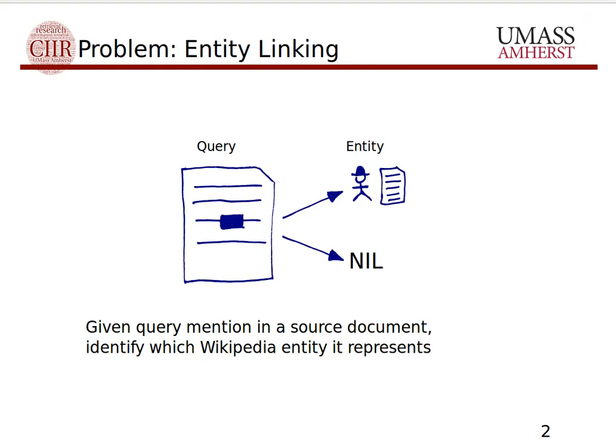So what is this problem that we're trying to tackle when we're talking about entity linking? We are given a document or a text fragment, and inside this document there's one little piece of text selected which is what we call an entity mention. We hope that this refers to an entity, and in entity linking we are also given a knowledge base. The task is to indicate which entity this string represents. If the string represents an entity in the knowledge base we return it; if not, we return nil — meaning none of the entities in our knowledge base represent the string.